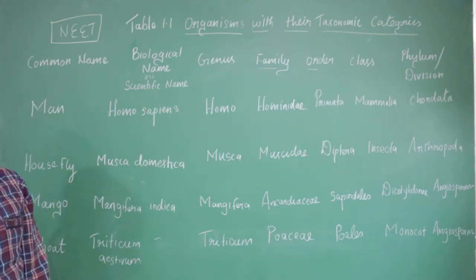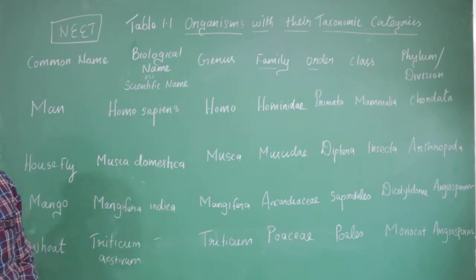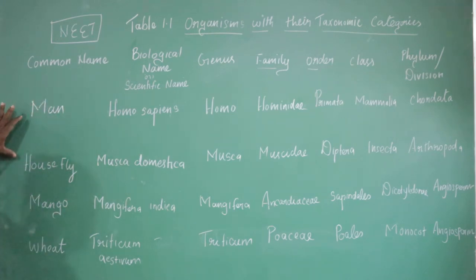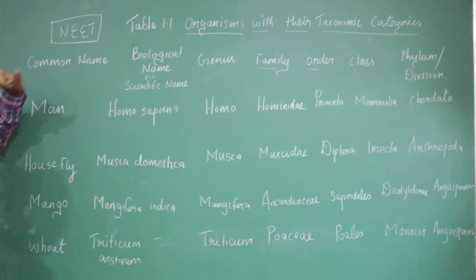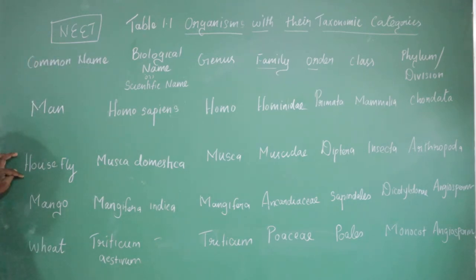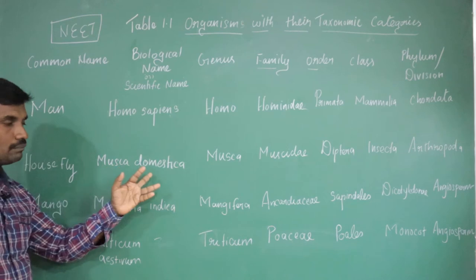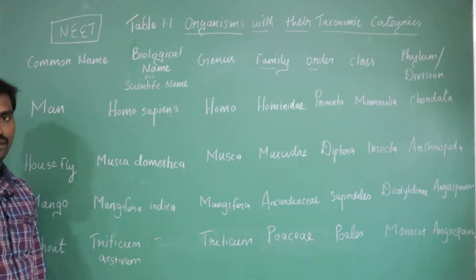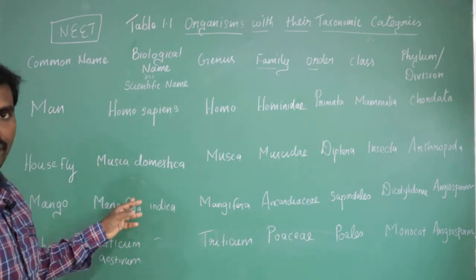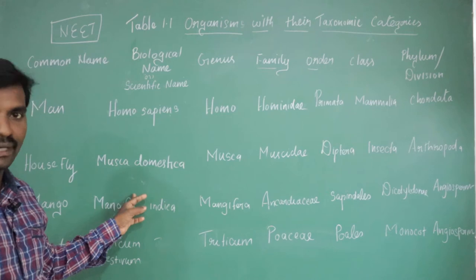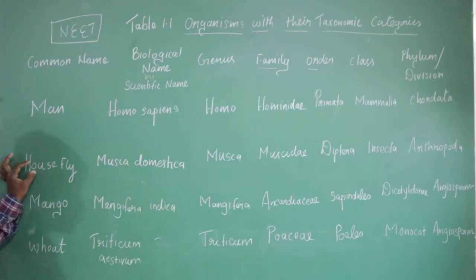In our NCERT book, they have given only four species: 2 animals and 2 plants. The given organisms are: man (human), house fly, mango, and wheat. Note that house fly is different from fruit fly. The house fly scientific name is Musca domestica. The fruit fly scientific name is Drosophila melanogaster.